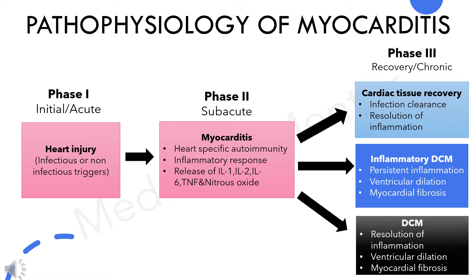In Phase 3, there are three possibilities: cardiac tissue recovery, inflammatory dilated cardiomyopathy, or permanent dilated cardiomyopathy. Viruses may cause myocyte apoptosis, meaning cell death, and in later stages of immune activation, cytokines play a leading role in remodeling and progressive heart failure.